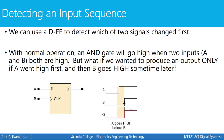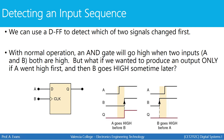Now let's look at the opposite scenario: person B presses their button first. Since person B pressed first, a clock transition happens before A has changed. This transition controls output Q, and at that point person A has not pressed their button yet, so A is zero — meaning input D is zero, which means Q is zero. If Q is one, you need to go to the first floor because they pressed first. If Q is zero, you need to go to the fifth floor. This is how you can use a flip-flop to detect an input sequence — which of two signals changed first.